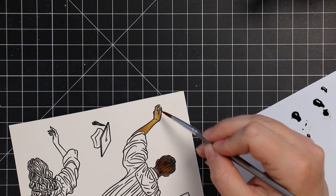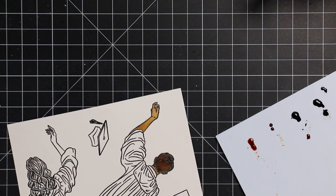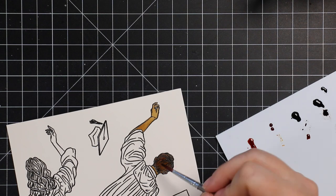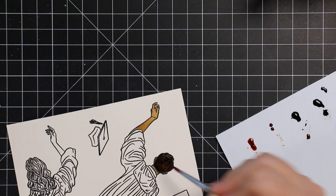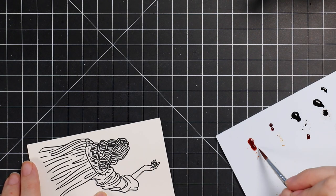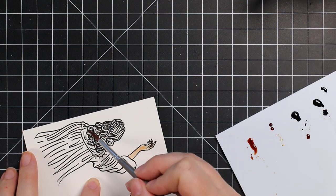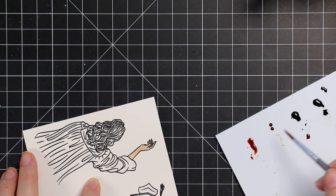For the first one, I used Gathered Twigs with the teeniest bit of Tattered Rose for the skin tone. And then for the hair, it was a mixture of Ground Espresso and Black Soot just to get it darker. Once I got that one painted, for the other skin tone it was more Tattered Rose with the teeniest bit of Gathered Twigs. And then for the hair, I did a little bit of Wild Honey and then added more Gathered Twigs.